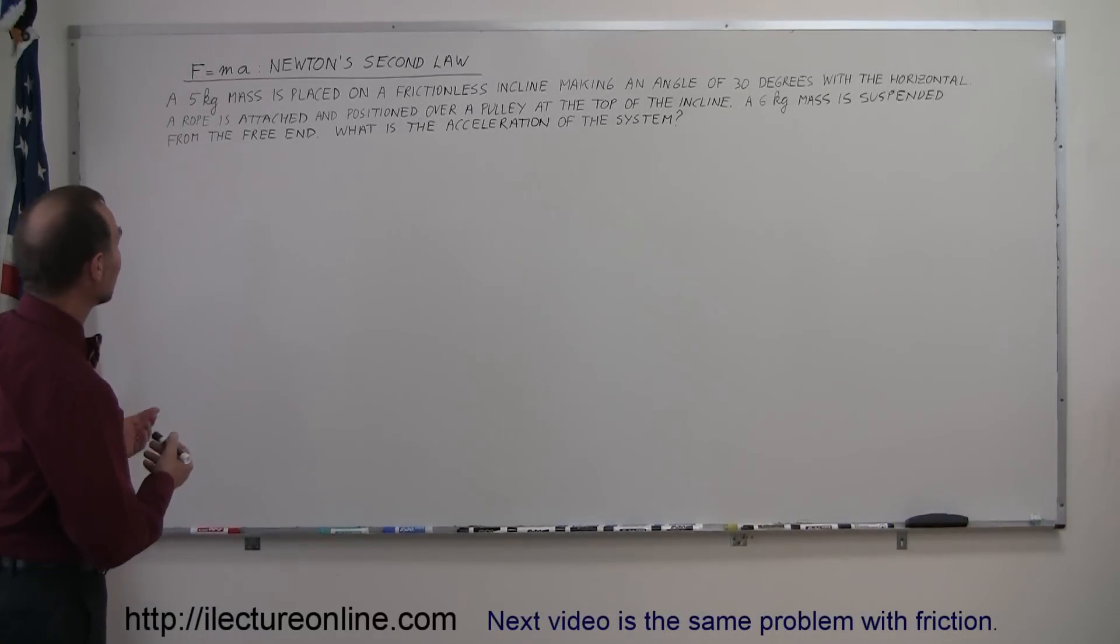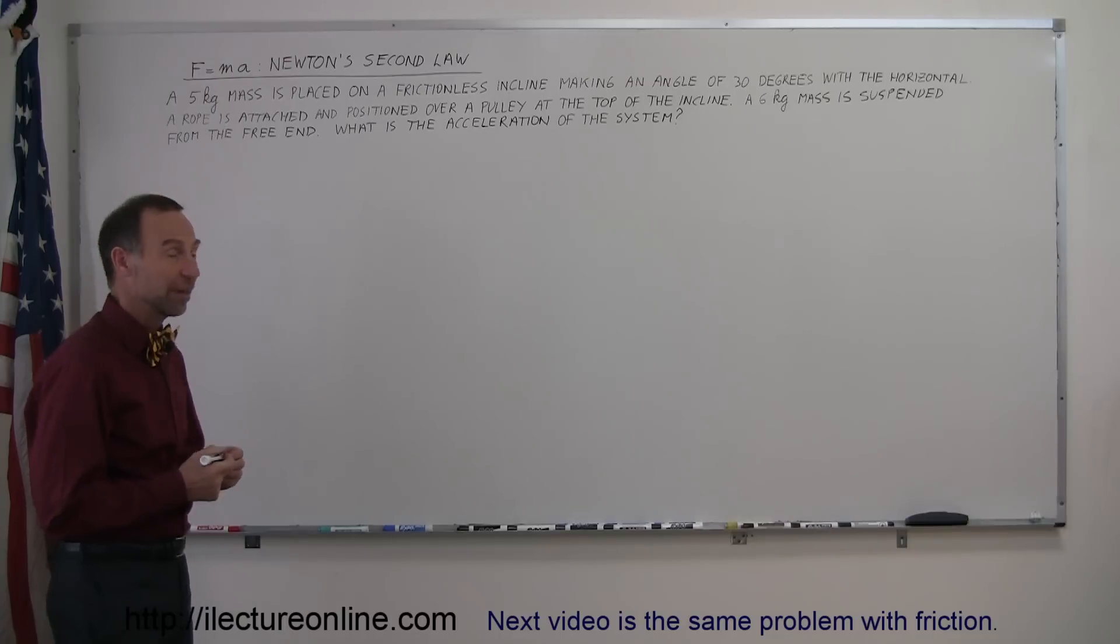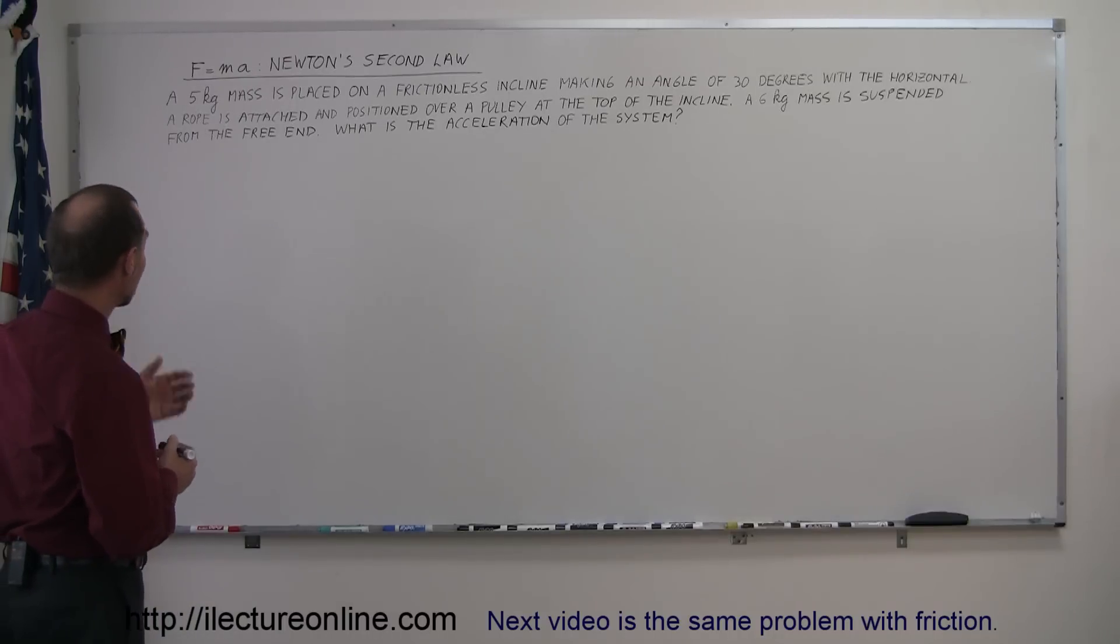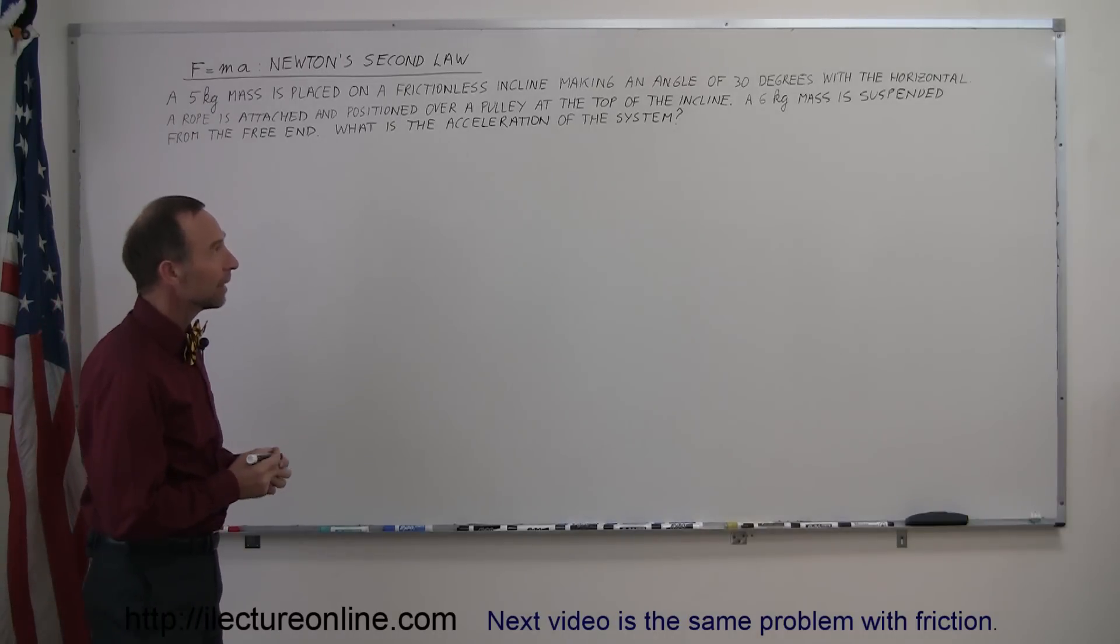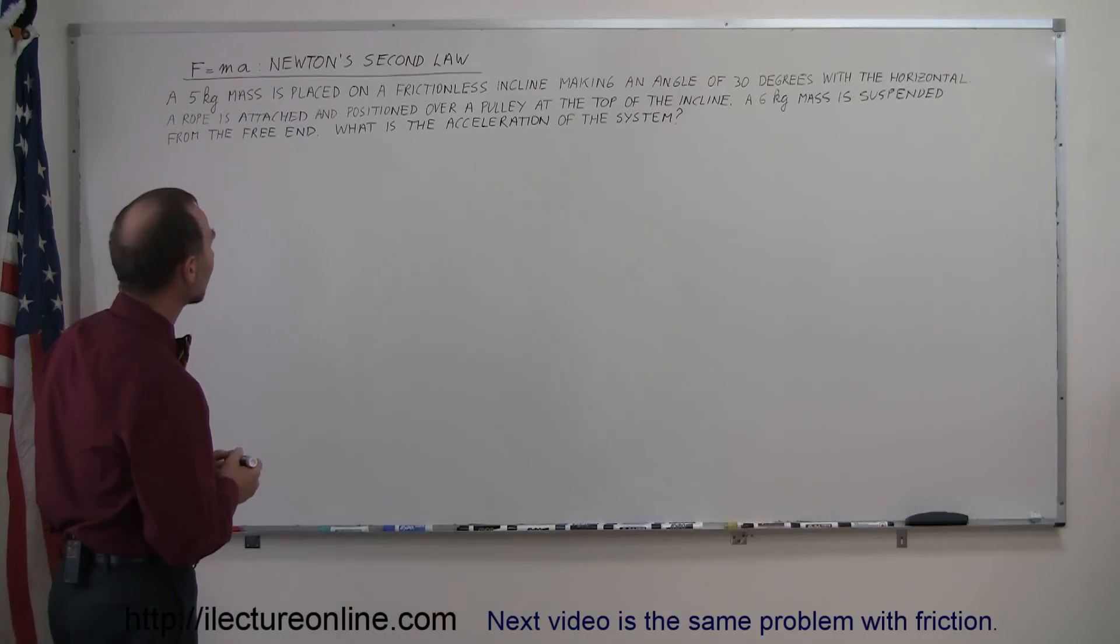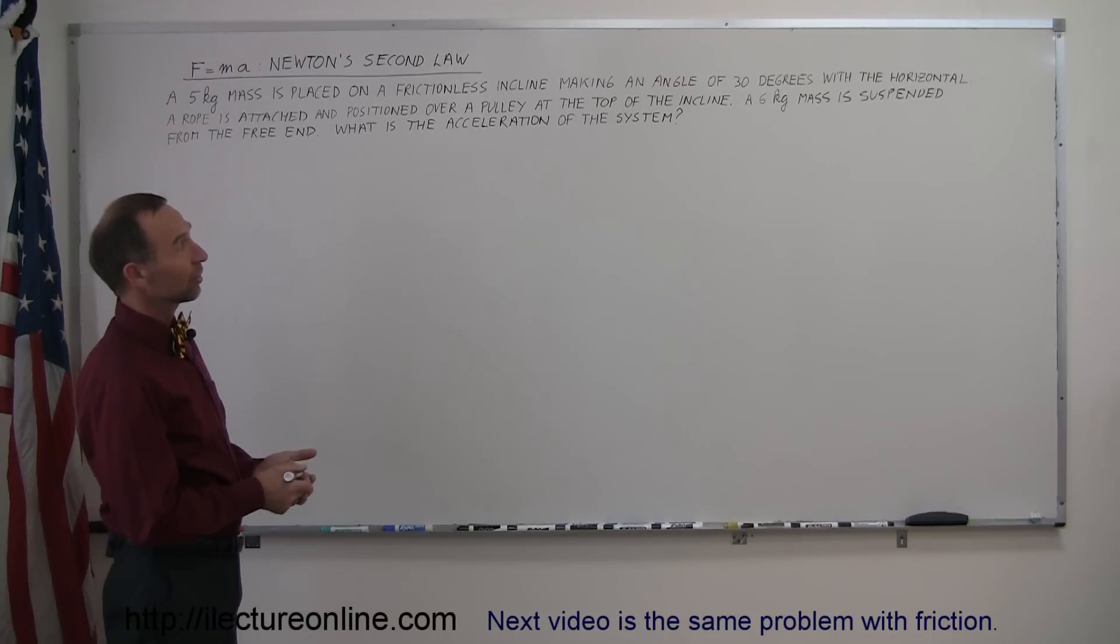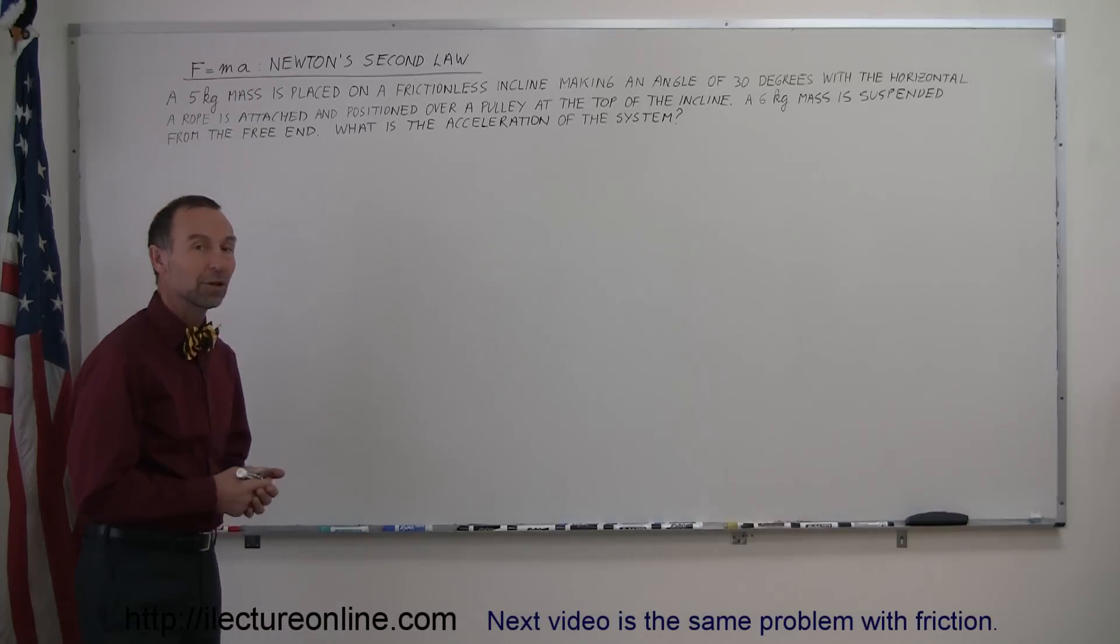Here's another example of how to do a physics problem involving Newton's second law, or F equals ma. Let's read the problem. A five kilogram mass is placed on a frictionless incline making an angle of 30 degrees with the horizontal. A rope is attached and positioned over a pulley at the top of the incline. A six kilogram mass is suspended from the free end. What is the acceleration of the system?